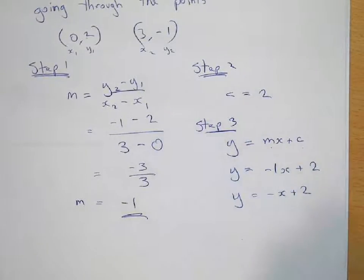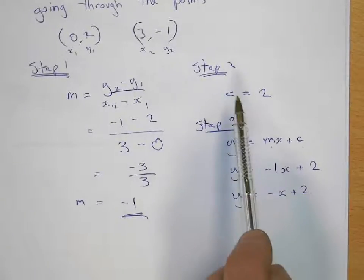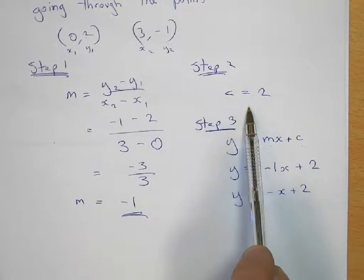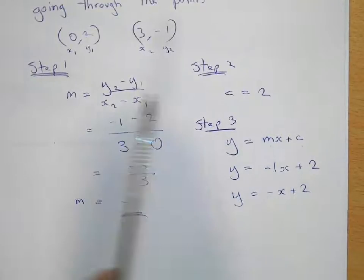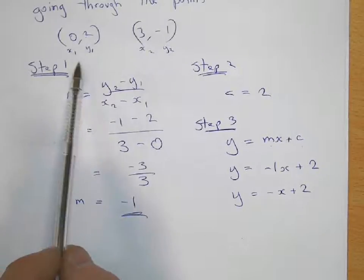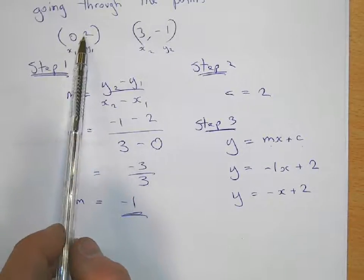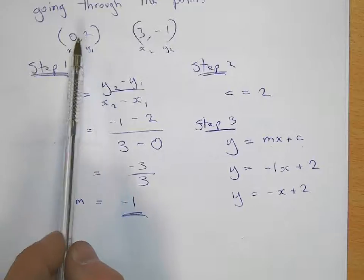How do I know c equals two? Remember, c is the y-intercept. Okay, and the y-intercept occurs on the y-axis, where the line touches the y-axis. And this point is on the y-axis.